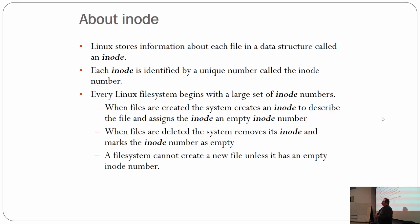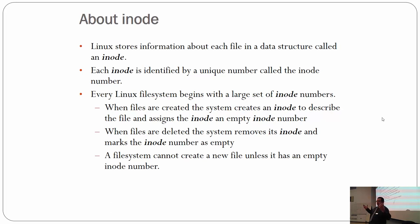Each file on a Linux file system has information about it contained in something called an inode. It has a unique number — each inode has a unique number, which means each file basically has a unique number. Each file system starts with a big pile of empty inodes. This is very different from other operating systems such as Windows or Mac, though Mac is kind of weird because it's partly Unix also.